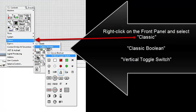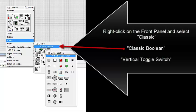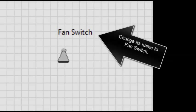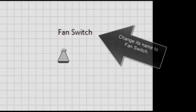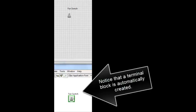Right click on the front panel and select classic, then classic boolean, then vertical toggle switch. Change its name to fan switch. Notice that a terminal block is automatically created.